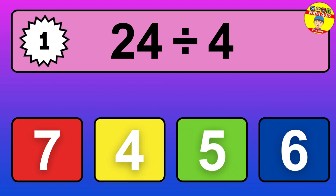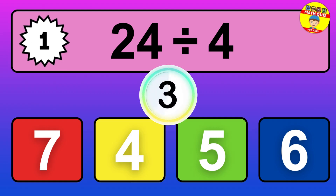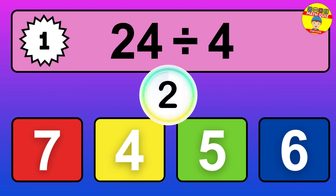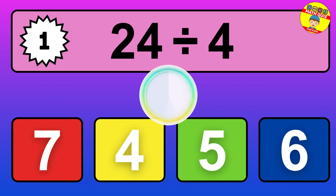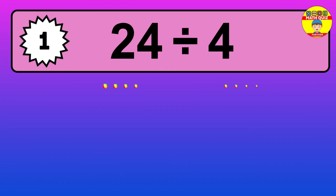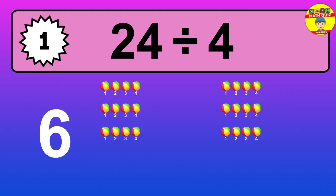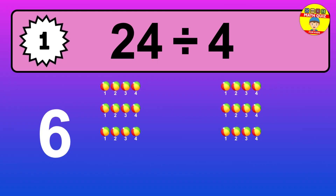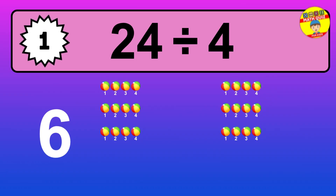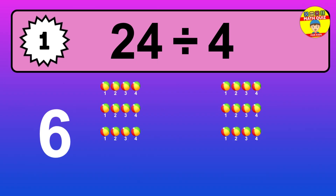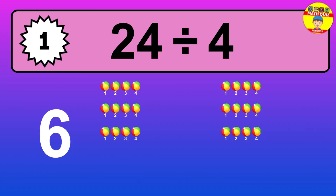24 divided by 4 — it's time to think. Let's go to the solution. Divide the number 24 by 4. Each group contains 4 units, so dividing 24 by 4 results in 6 equal groups. Thus, the result is 24 divided by 4 equals 6.